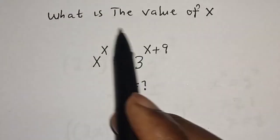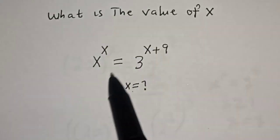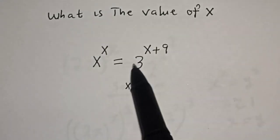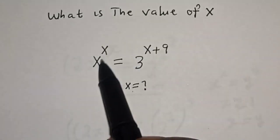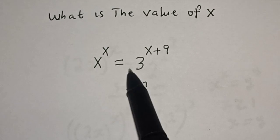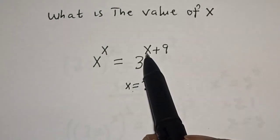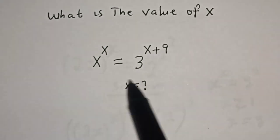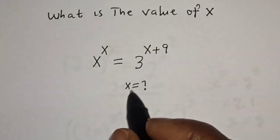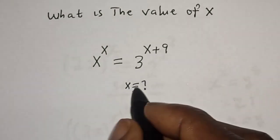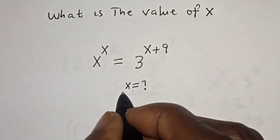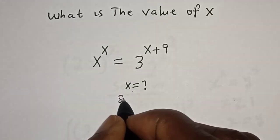Hello, welcome to Magis. In this class we want to find the value of s from this equation: s to the power of s is equal to 3 to the power of x plus 9. Like, share, comment and subscribe.